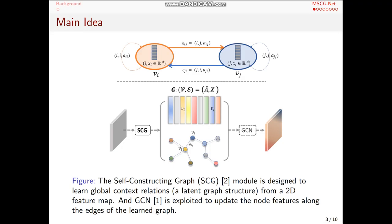And the graph convolutional network, GCN, is then exploited to aggregate the global relationships to update the node features. It's based on the newly constructed graph structure.